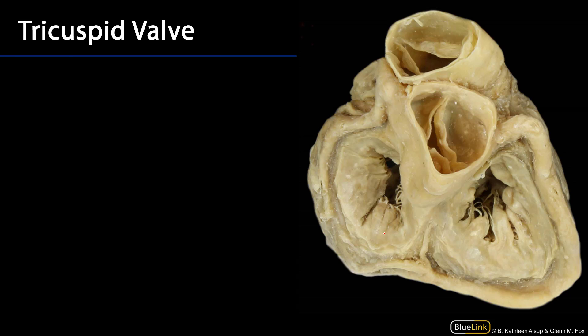The right atrium serves as a pass-through conduit for blood into the right ventricle. Here is the opening for the right ventricle, or for the tricuspid valve. The tricuspid valve has three cusps: an anterior cusp, a posterior cusp, and a septal cusp. That septal cusp is largely immobile, so in function the tricuspid valve works more as a bicuspid valve.